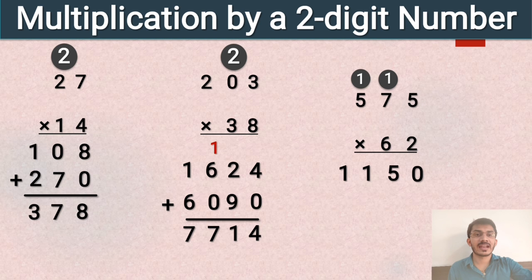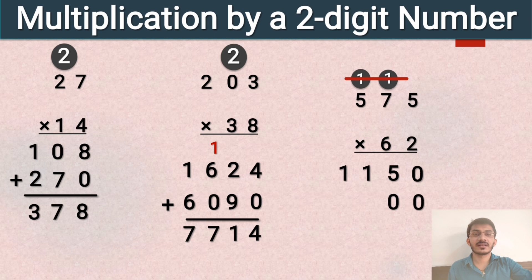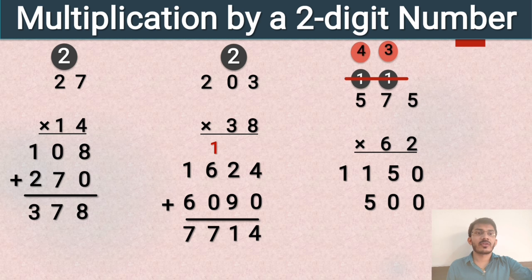So 0 is written at the ones place. Remember to remove any carry from the previous multiplication step. 6 times 5 is 30, write 0 and carry 3. 6 times 7 is 42, plus 3 is 45, carry 4. 6 times 5 is 30, plus 4 is 34.